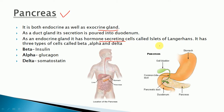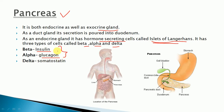The hormone-secreting cells of the pancreas are called the islets of Langerhans — this is very important to remember. The islets of Langerhans have three types of cells: beta, alpha, and delta. Delta is not in your syllabus, so we will study alpha and beta cells. Beta cells secrete insulin and alpha cells secrete glucagon.